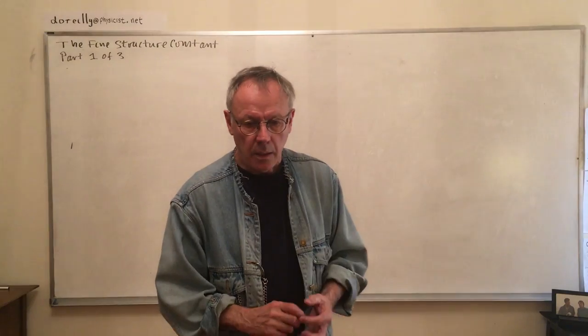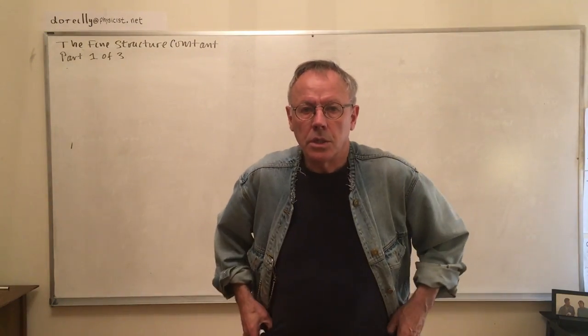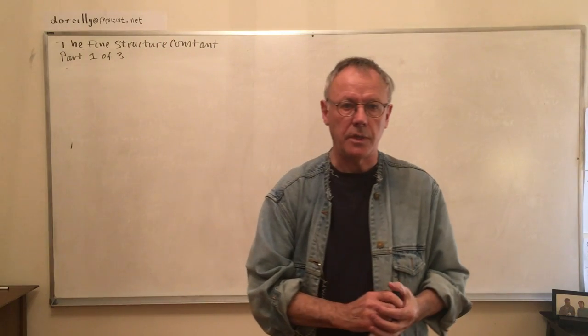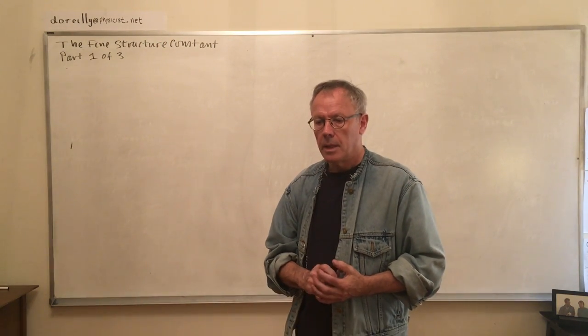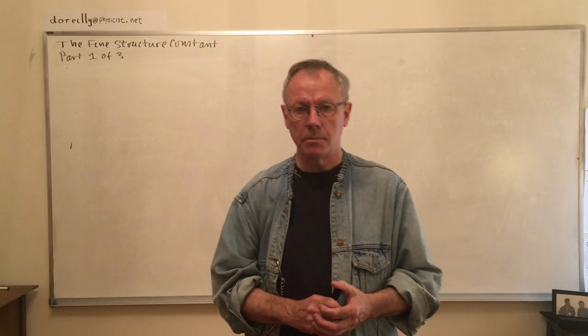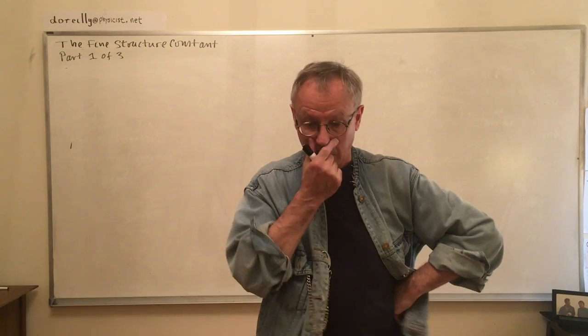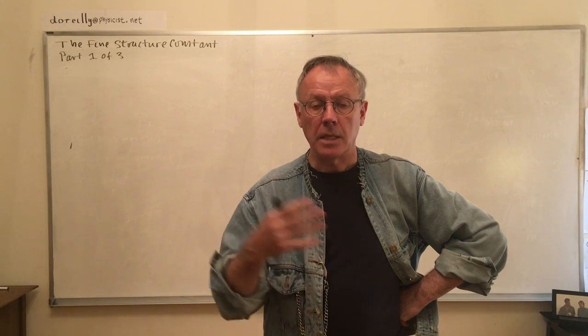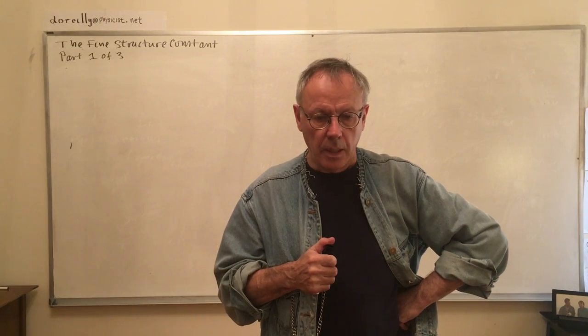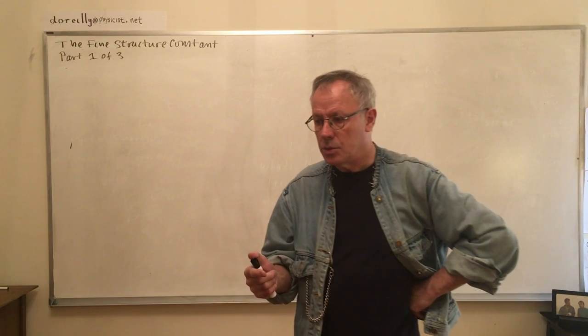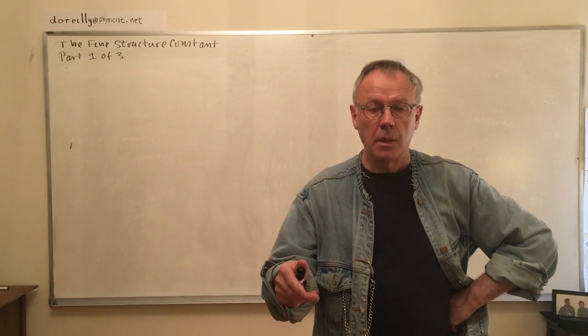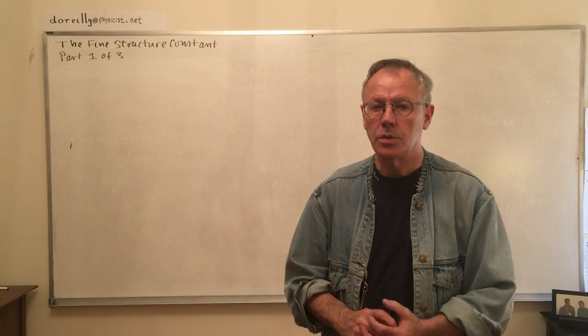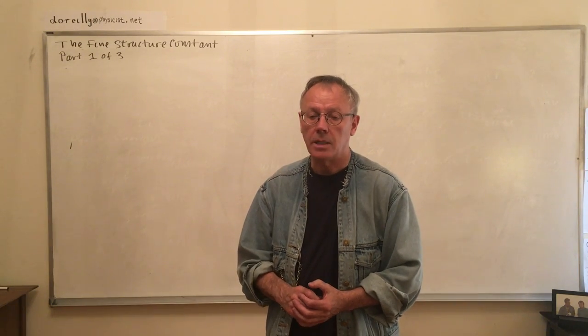Good afternoon. One of the most mysterious objects in theoretical physics, the subject I call natural philosophy, that's what Newton called it, is a thing called the fine structure constant. It is a quantity that comes out of quantum mechanics and quantum field theory, and it has a value that nobody knows why it's that value and what's the origin of it. Basically, nobody knows the actual real origin of the fine structure constant.